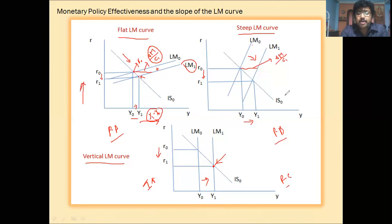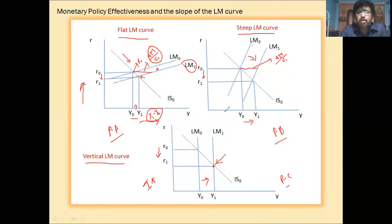If the LM curve is steeper — parallel to the vertical axis — or in other words, if the demand for money is completely insensitive to the interest rate, then the effectiveness of monetary policy is much greater. I hope you have understood the effectiveness of monetary policy and the slope of the LM curve.